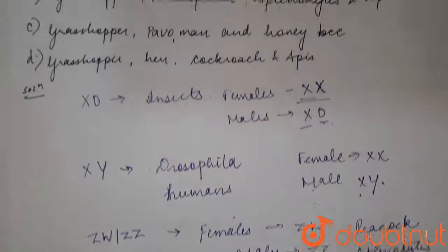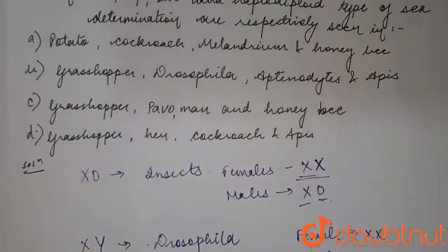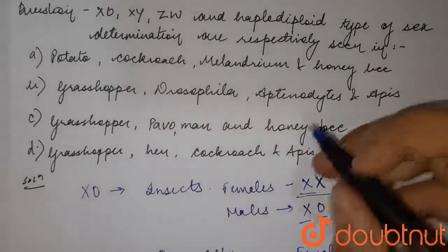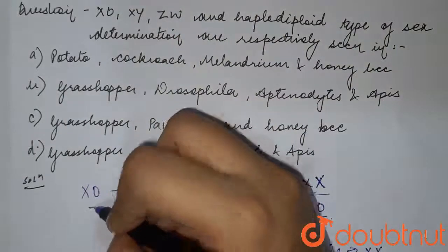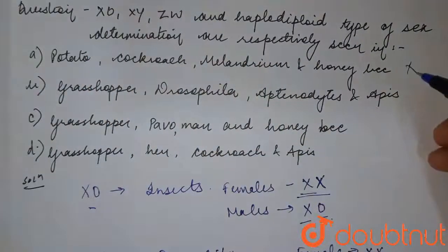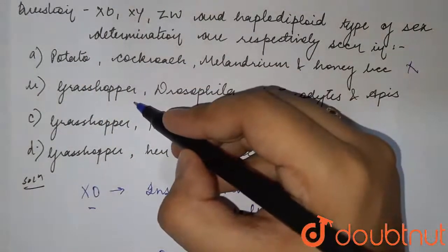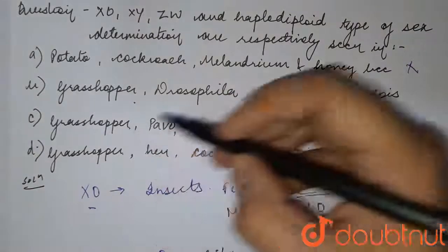So option A will be incorrect. Option B we can see, C and D. Then in option B it is saying Drosophila, which is for XY.